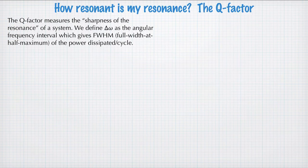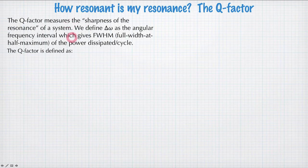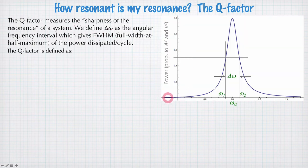Now we're going to ask the question, how resonant is my resonance? This is an introduction to the concept of a Q factor. Now the Q factor measures the sharpness of the resonance of the system. So let's think about a curve here, where what we're doing is driving a resonator, and we're increasing the driving frequency until we hit resonance here. So this is the resonant frequency. We go past the resonance, and the response drops. And what I've plotted here is the power dissipated by the resonator.